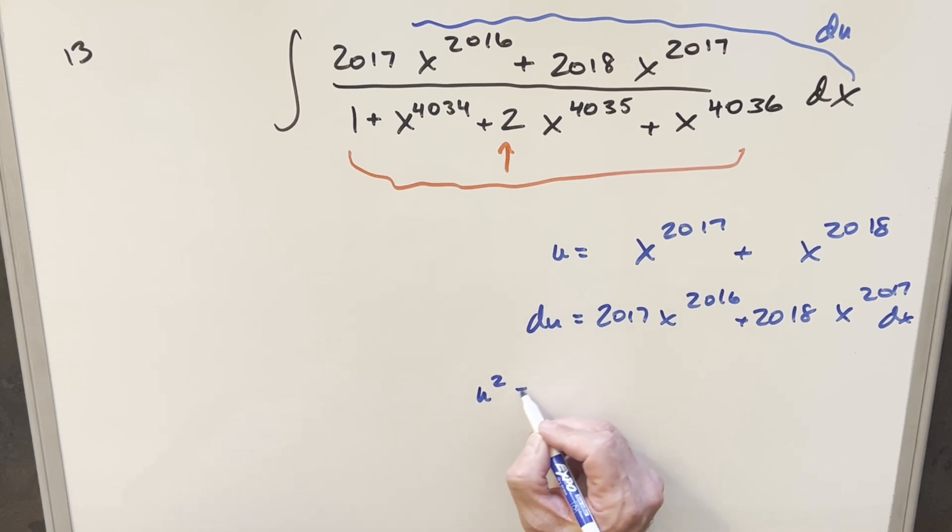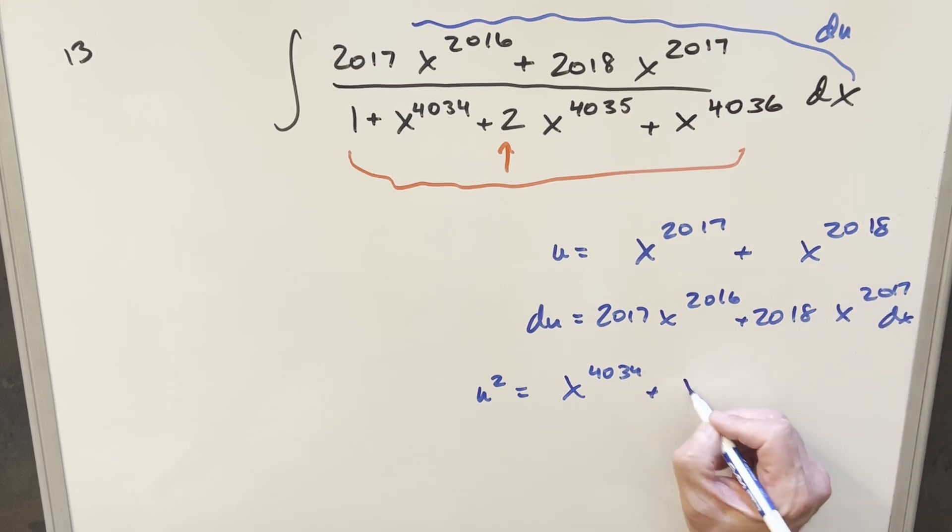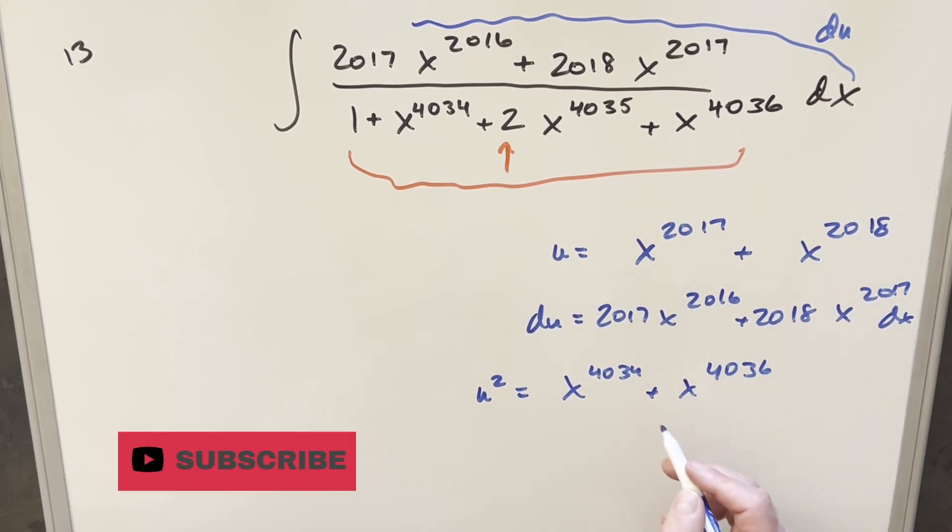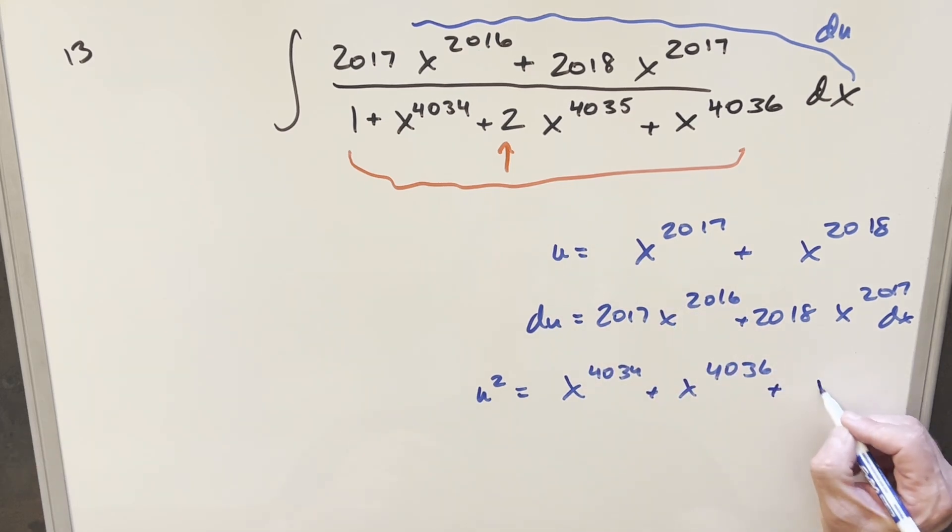So if we square this thing out, we'll get here x to the 4034. Then let's just square this. We get x to the 4036. For the middle terms, when you multiply these together, you're going to have x to the 4035. And when you distribute it out, you're going to have two copies of this. So we have our 2x to the 4035.